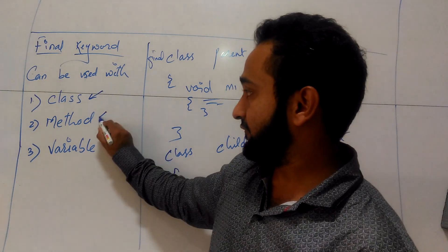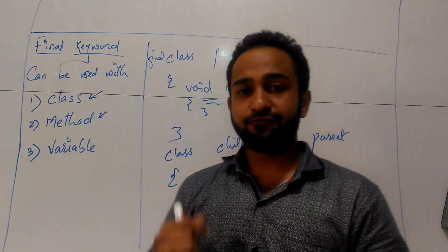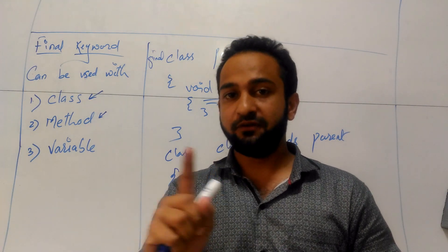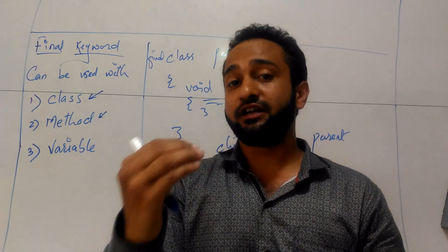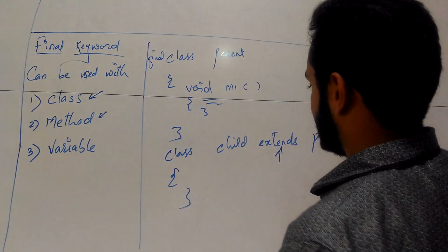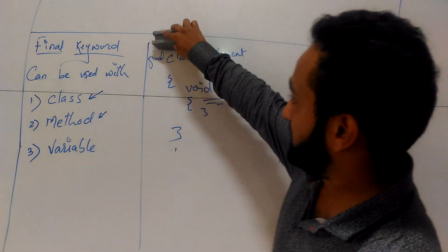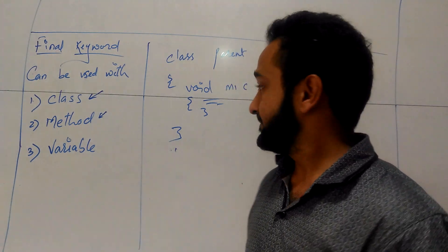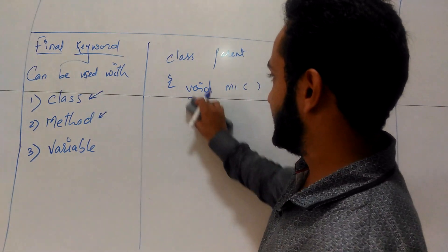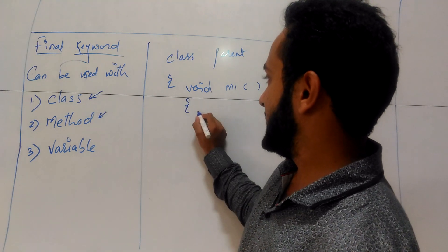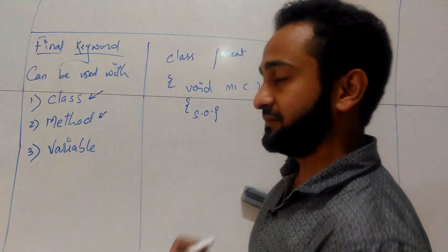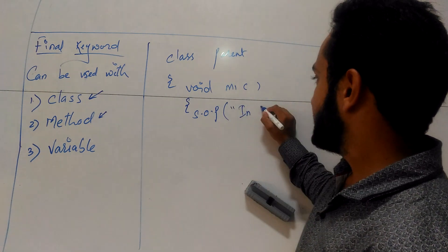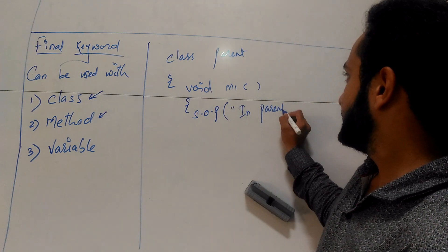Now consider the final keyword with a method. If you define any method as final, that method cannot be overridden — let that be very clear. It cannot be overridden, but it will get inherited for sure. Suppose my parent class is a normal class, not final, and I have a method void m1 with a simple functionality — System.out.println in parent class.